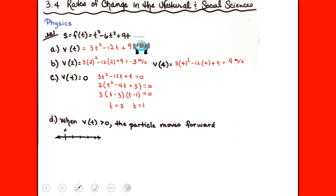We have a quadratic, so we can factor it or use the quadratic formula. Factoring gives t = 1 and t = 3; at those two times the particle is at rest. Part (d) then asks when the particle is moving forward — that is, in the positive direction.